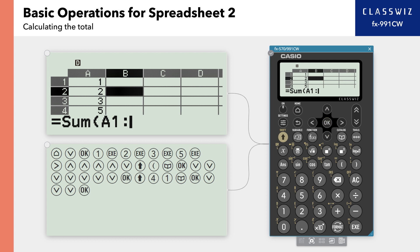Now, enter A4 closing parenthesis. Finally, press Execute to show the total value of cells A1 through A4.